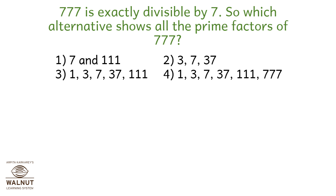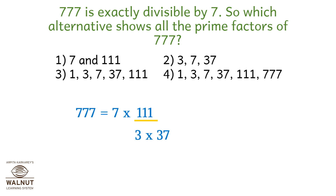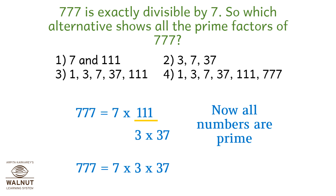777 is exactly divisible by 7. Which alternative shows all the prime factors of 777? We have to find the prime factors of 777. The factors are 7 × 3 × 37. In option 2, all are prime numbers and those are the factors of 777, so that is the correct option. In option 1, the number 111 is not prime. In option 3, the numbers 1 and 111 are not prime. In option 4, the numbers 1, 111, and 777 are not prime. Therefore, the correct option is option number 2.